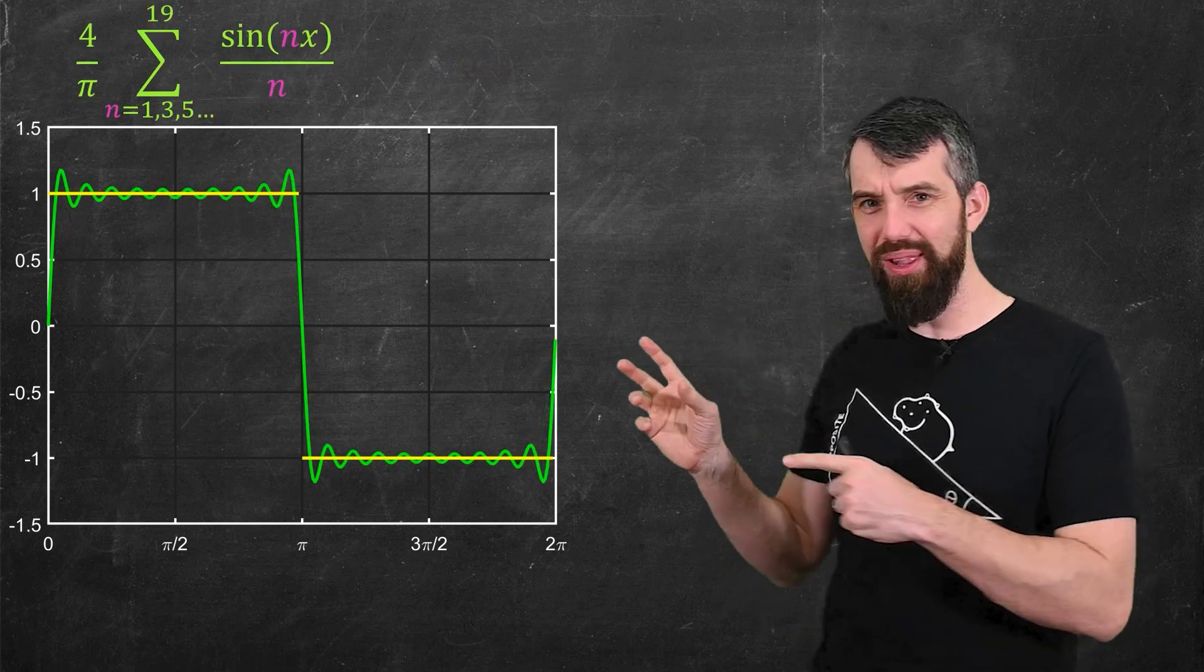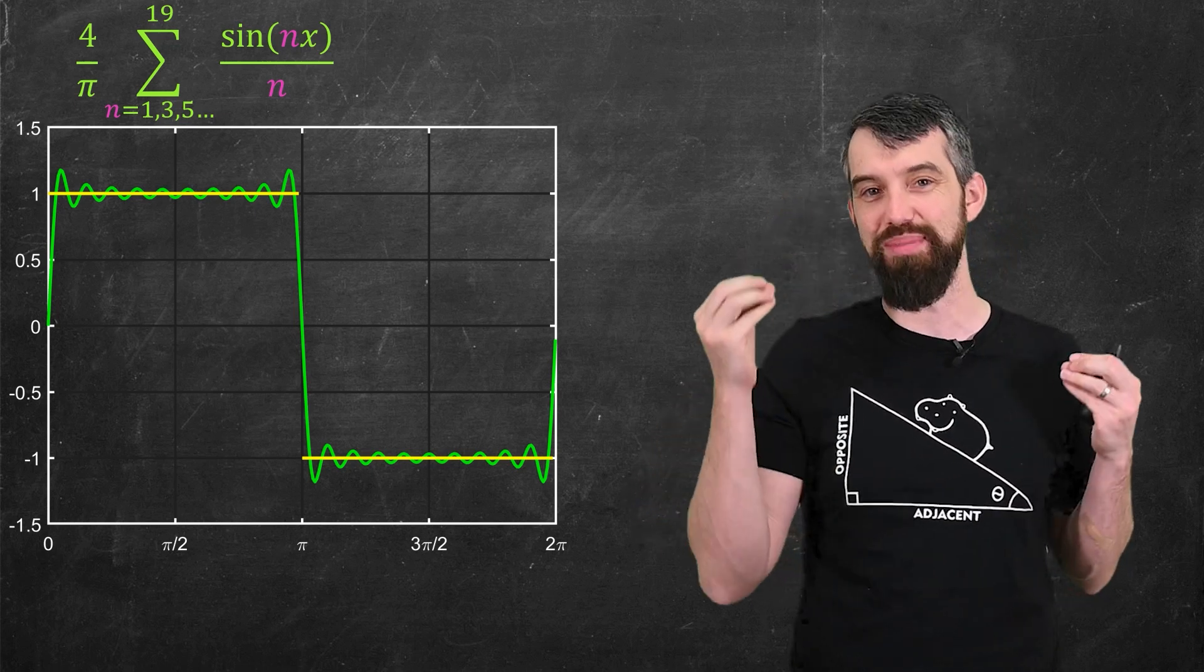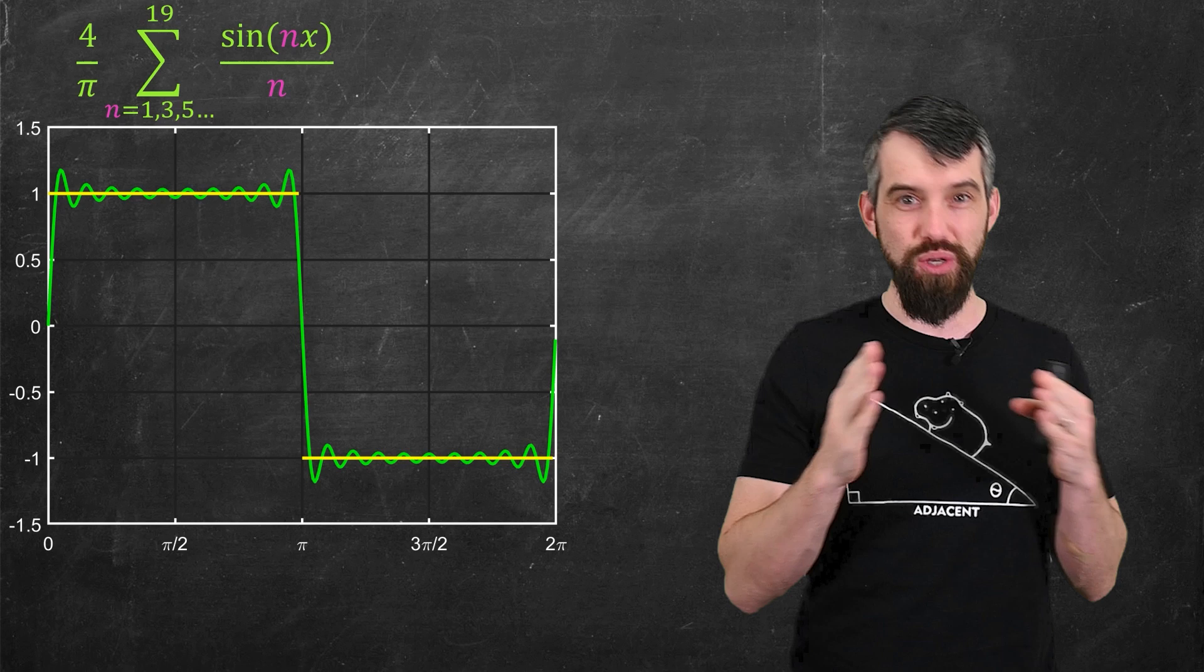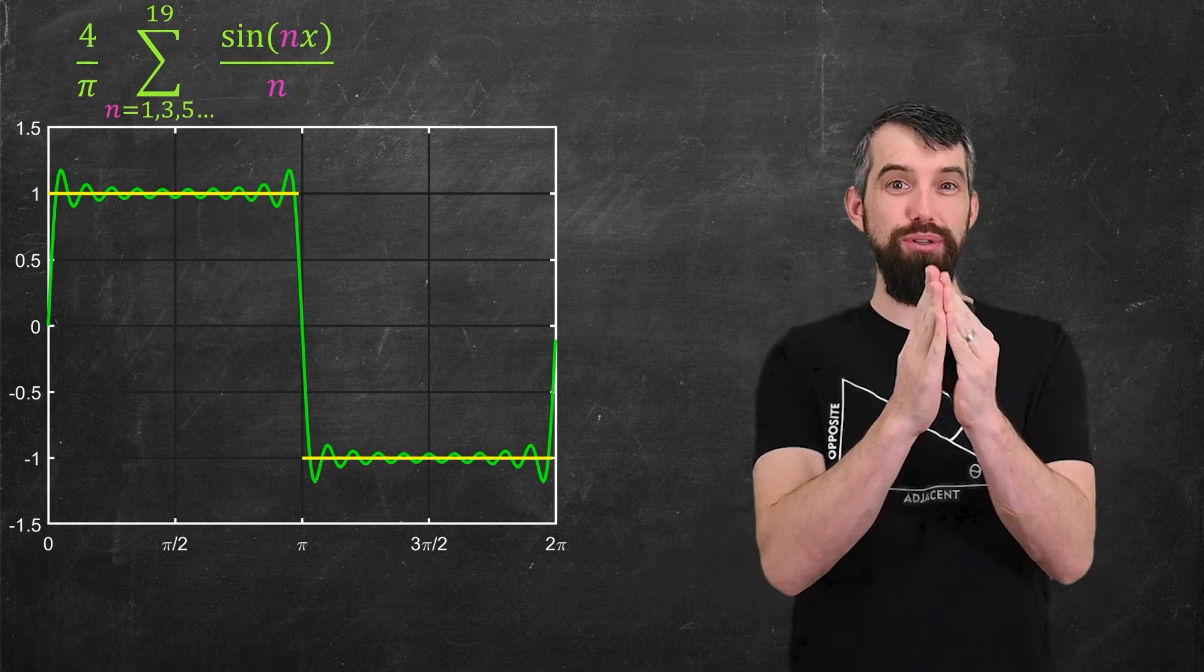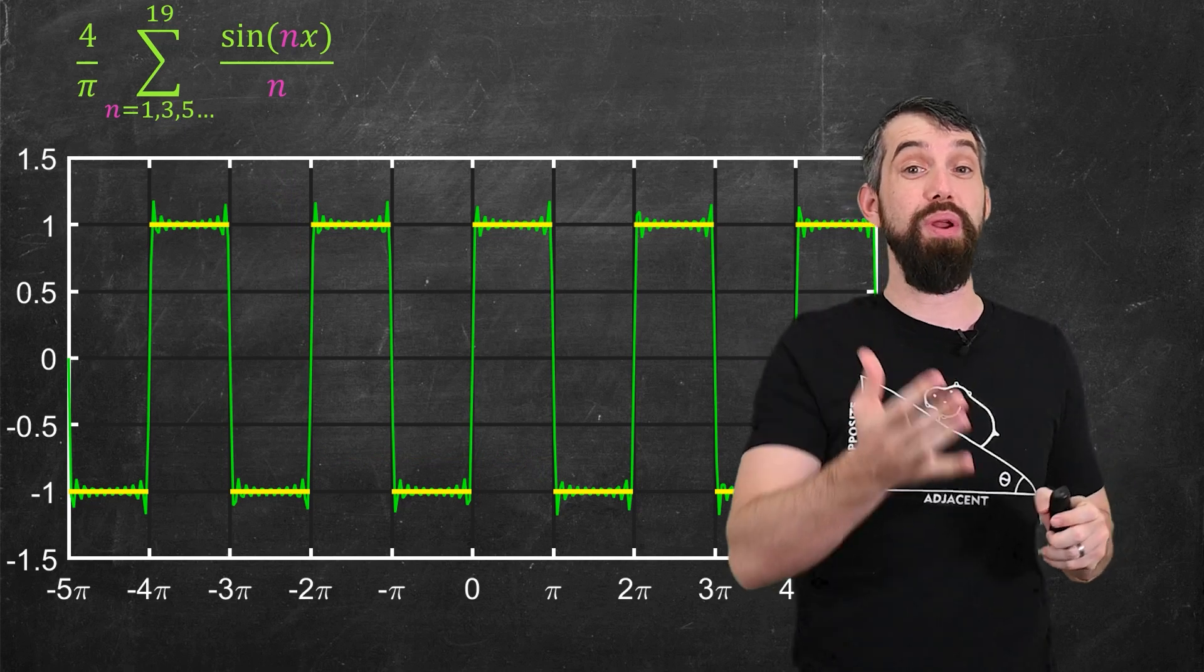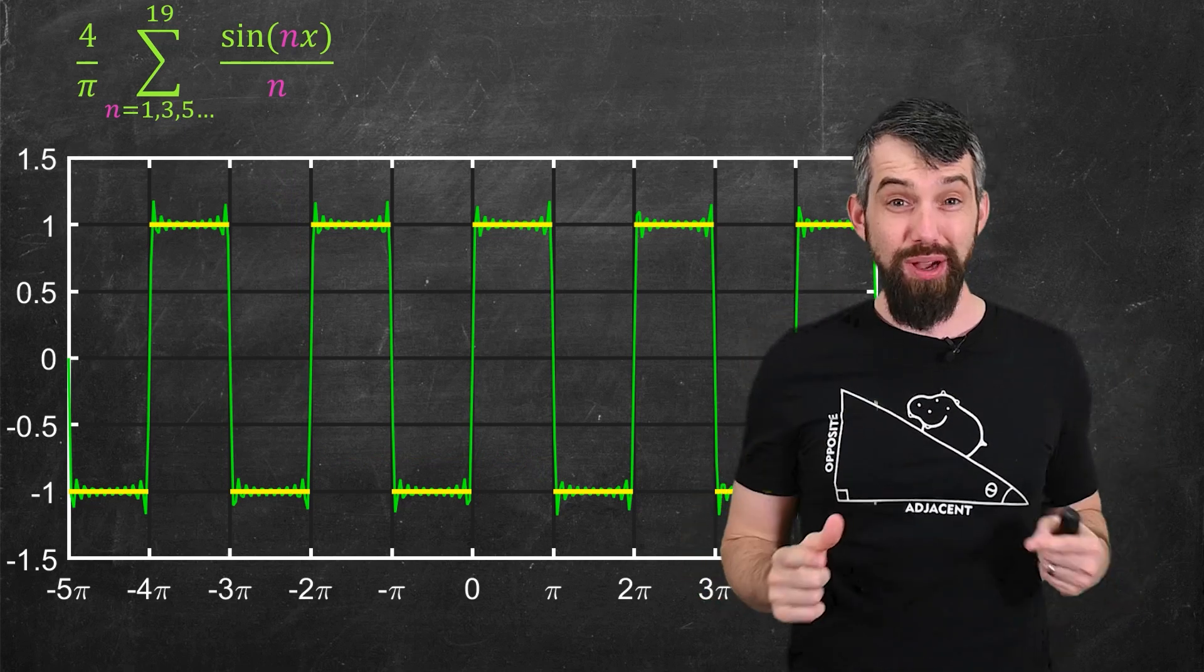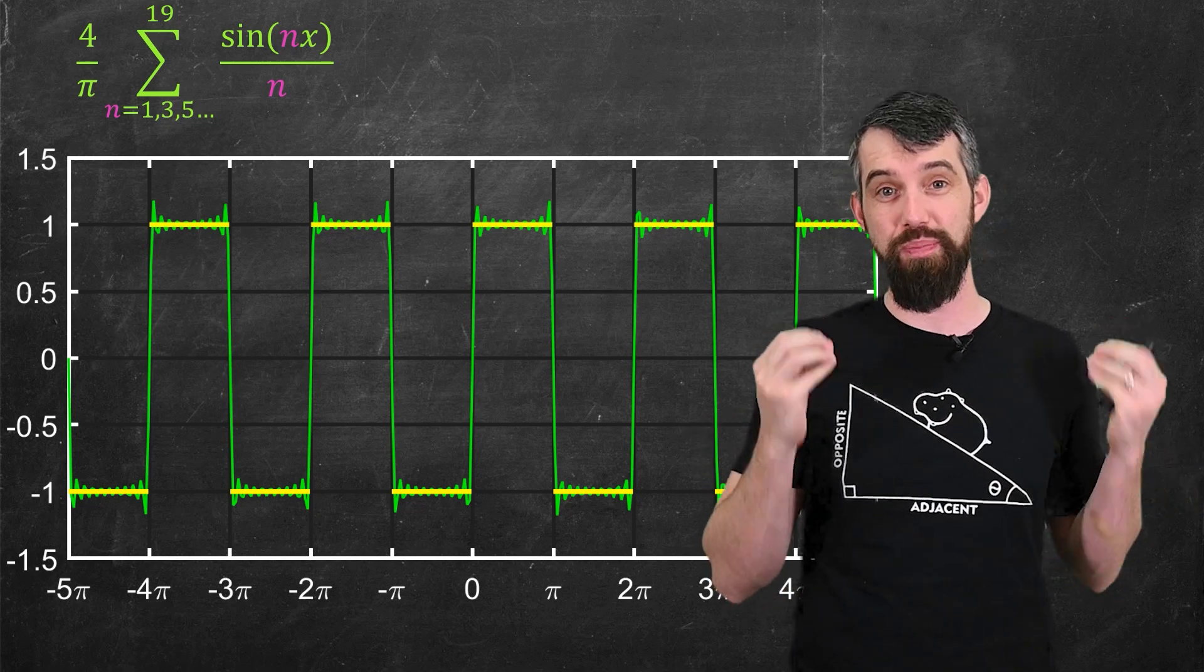This one here, for example, is summing up to sin(19x), and it's getting to be a much better approximation, at least away from the discontinuities. And what's really cool about this approximation is I was just looking from 0 to 2π, but if this is a periodic function that repeats itself over and over again, then that approximation is really good throughout this entire domain where it's periodic.